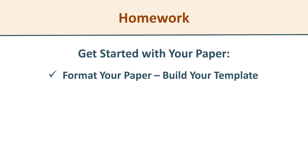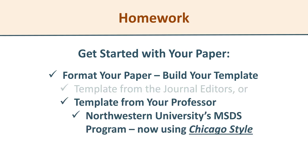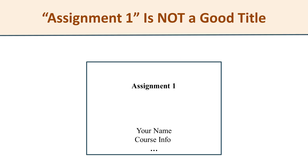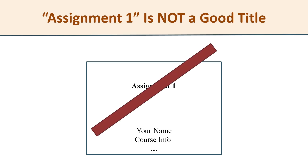Three steps for right now. Step one: format your paper. If you're enrolled in Northwestern University's Master of Science in Data Science program, you'll find that your professor has some sort of template they can give you, because we've all gotten into the Chicago style and we're using a consistent approach right now. Second: put down an interesting, meaningful, preferably somewhat attention-getting title. As a word to my students — 'Assignment 1' no longer cuts it. Putting down 'Assignment 1' as a title is going to get you some serious point docking, just so you know.